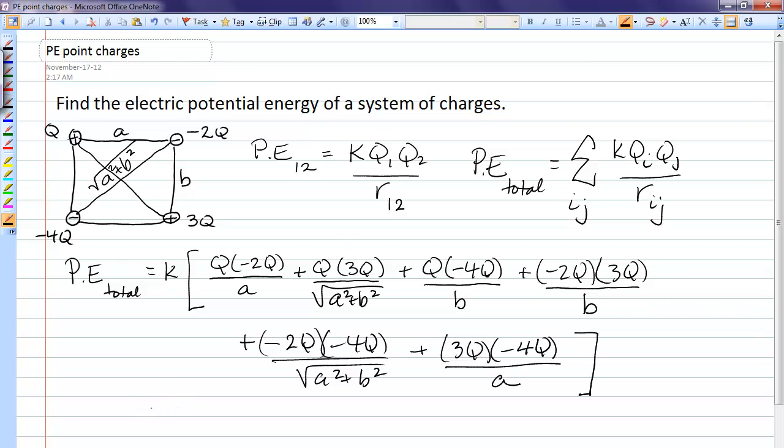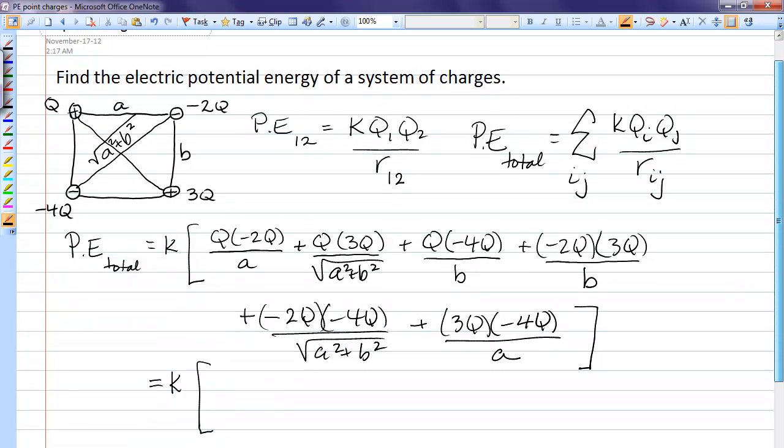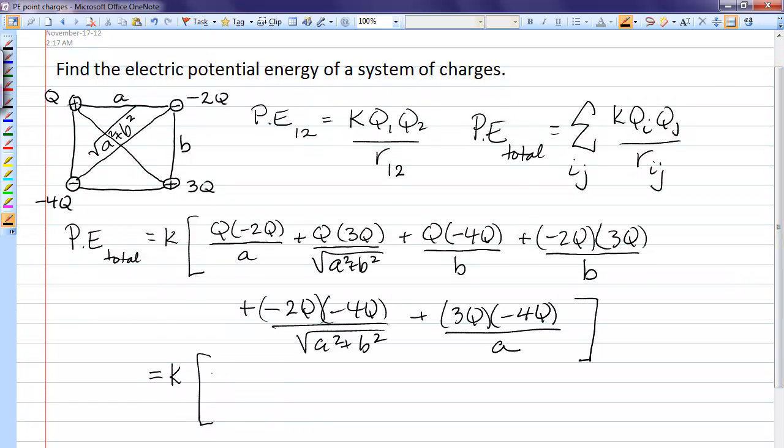Gathering these terms together, remembering that if one charge is negative, the actual potential energy of that pair is negative. I can also pull a Q squared out of this.